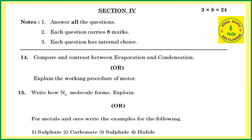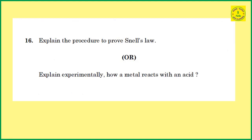Section 4 questions: answer all the questions. Each question carries 8 marks, and each question has an internal choice. So 3 into 8 equals 24 marks for this section. For example, question 14 gives a choice between: compare and contrast evaporation and condensation, or explain the working procedure of a motor.